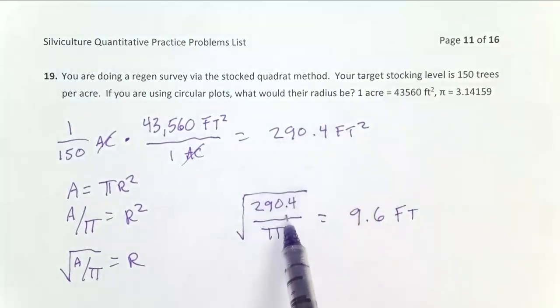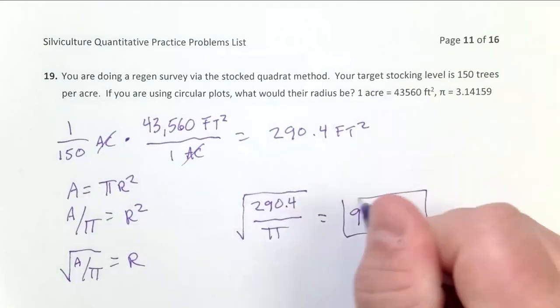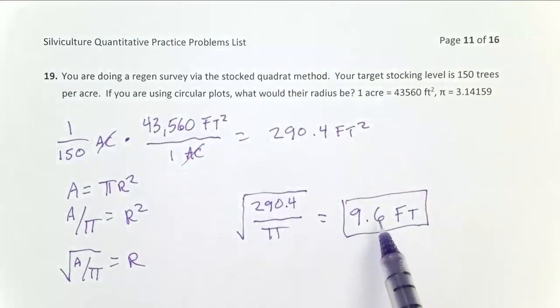The units on 290.4 were feet squared. I took the square root of it, which left me just feet. So that's my answer.